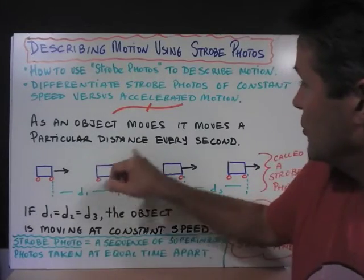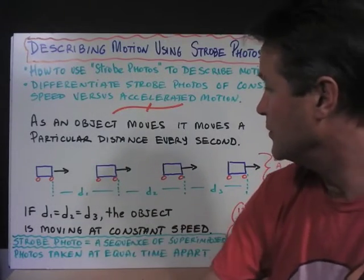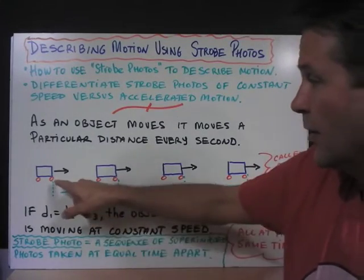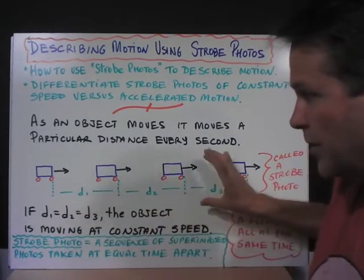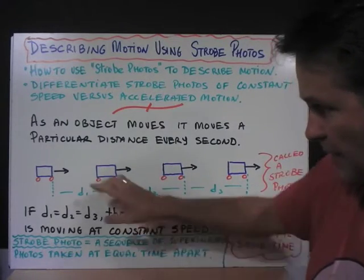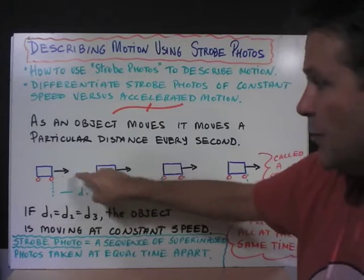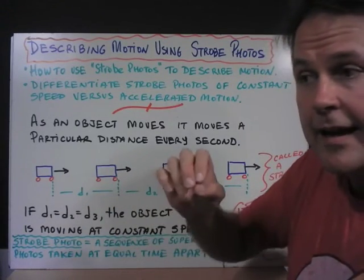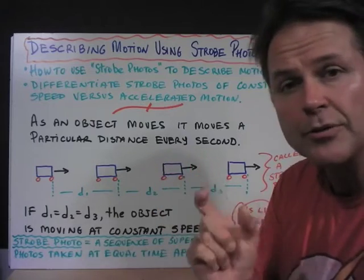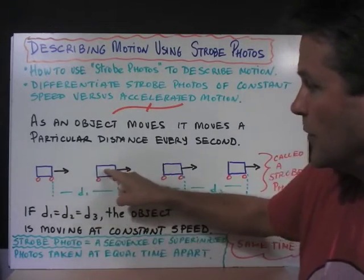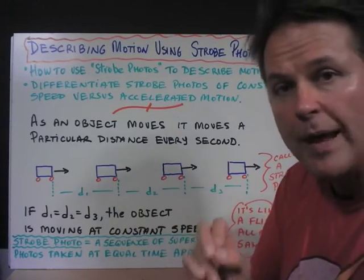As an object moves, it moves a particular distance every single second. What I have depicted here are a series of photos, and we call this a strobe photo. A strobe photo consists of a sequence of photos taken one after the other with the identical time period in between. For example, these photos could have been taken one photo every second.